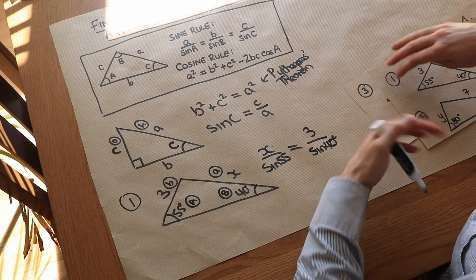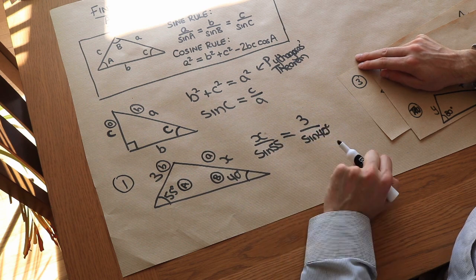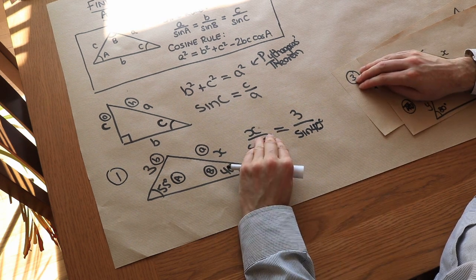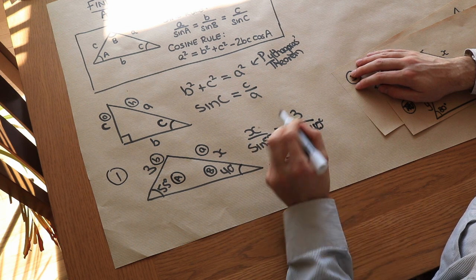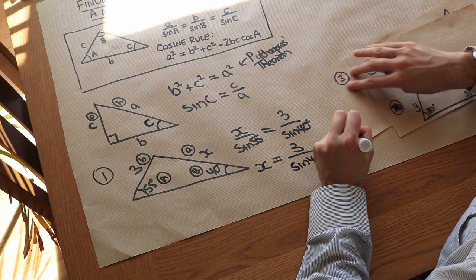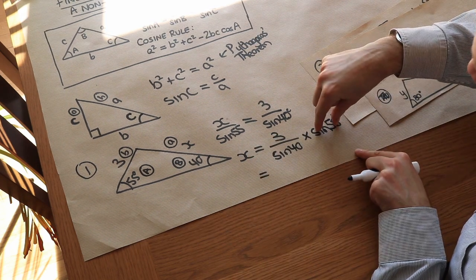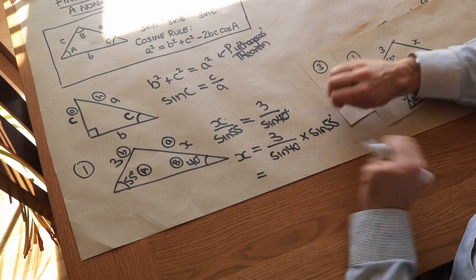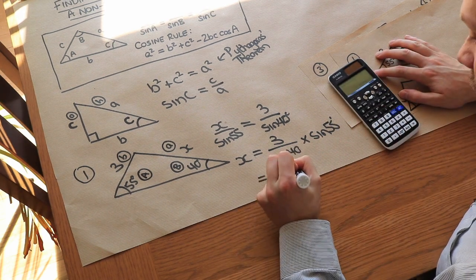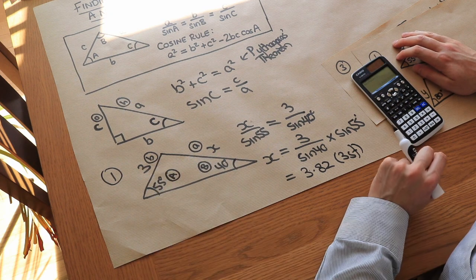Now we solve for x. It's currently divided by sine 55, so we multiply both sides by sine 55. That gives us x equals 3 times sine 55 over sine 40. Putting that into the calculator gives 3.82 to 3 significant figures. That looks sensible — this side length looks a bit longer than the 3, so it's probably right.